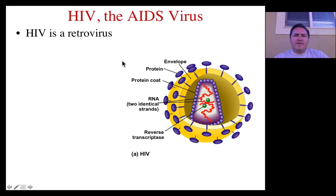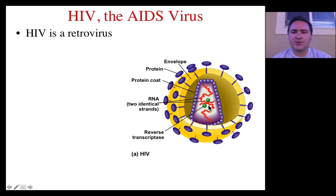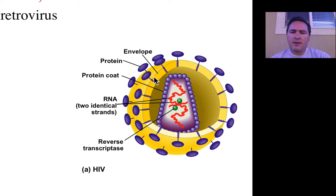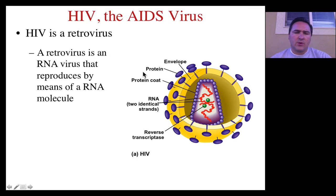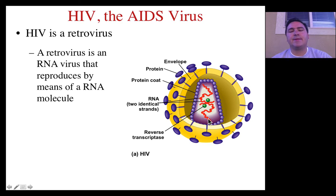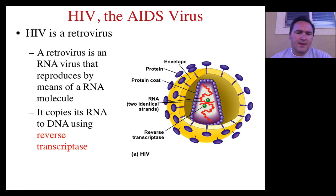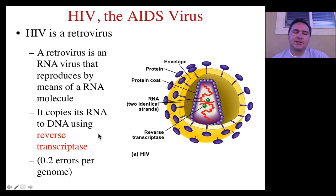The HIV virus, which leads to AIDS, is what's called a retrovirus. As we just saw, it's a single-stranded RNA virus constructed with an envelope that has proteins around it, the RNA inside, and reverse transcriptase. A retrovirus is called this because it's an RNA virus that reproduces itself by retro-transcribing RNA back into DNA and then inserting that DNA into the genome of the host. To do this, it must copy that RNA back to DNA using reverse transcriptase.